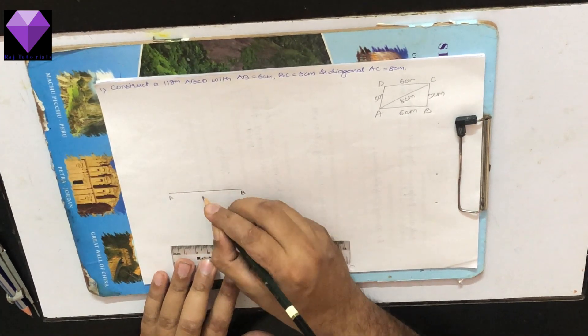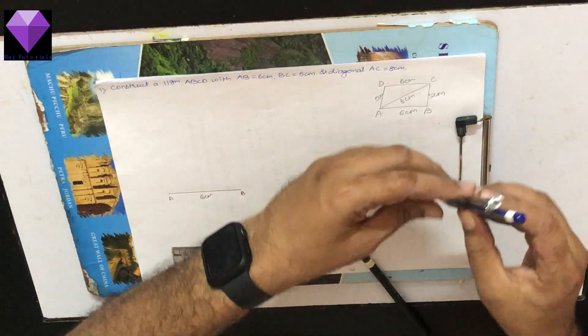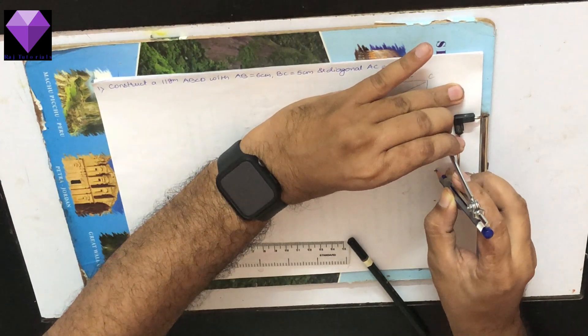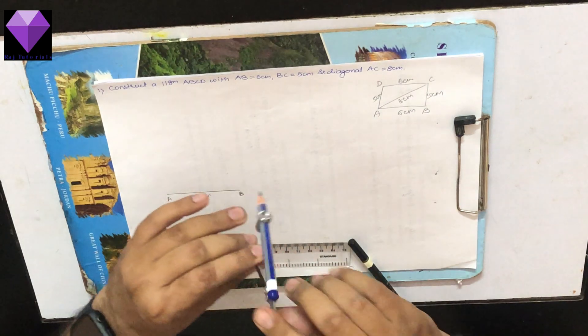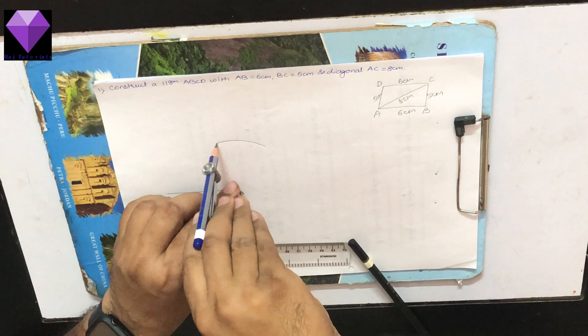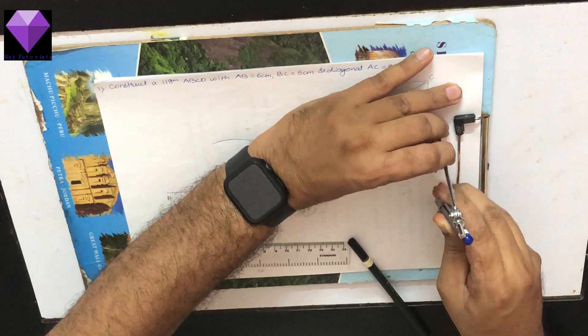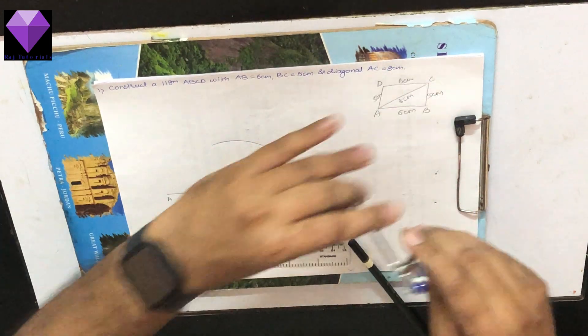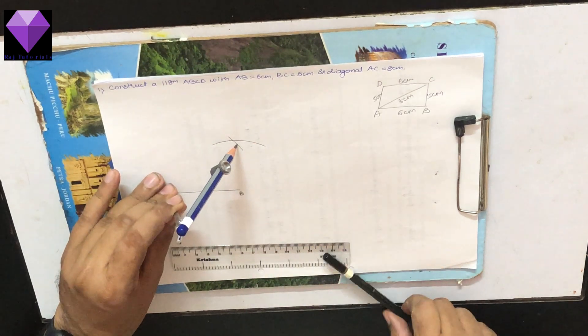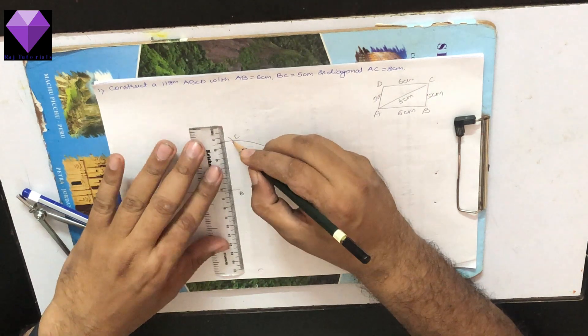On that I have to draw a 5 cm line segment and an 8 cm line segment. With B as center and radius 5 cm, I am making an arc, and with A as center and radius 8 cm, I am cutting this arc to get the C point. Now I have got my C point, I am joining BC.